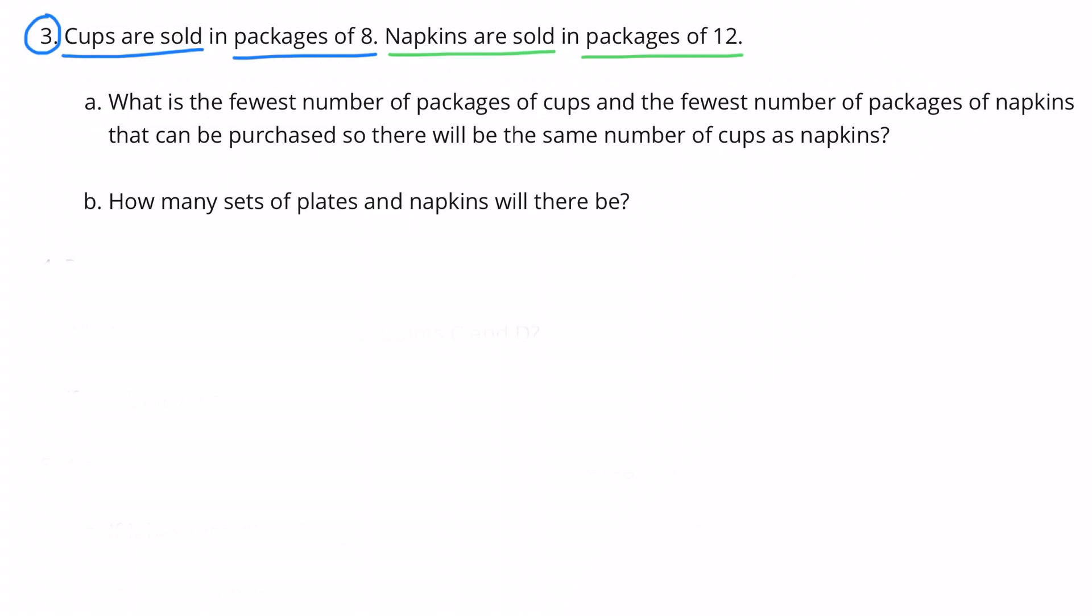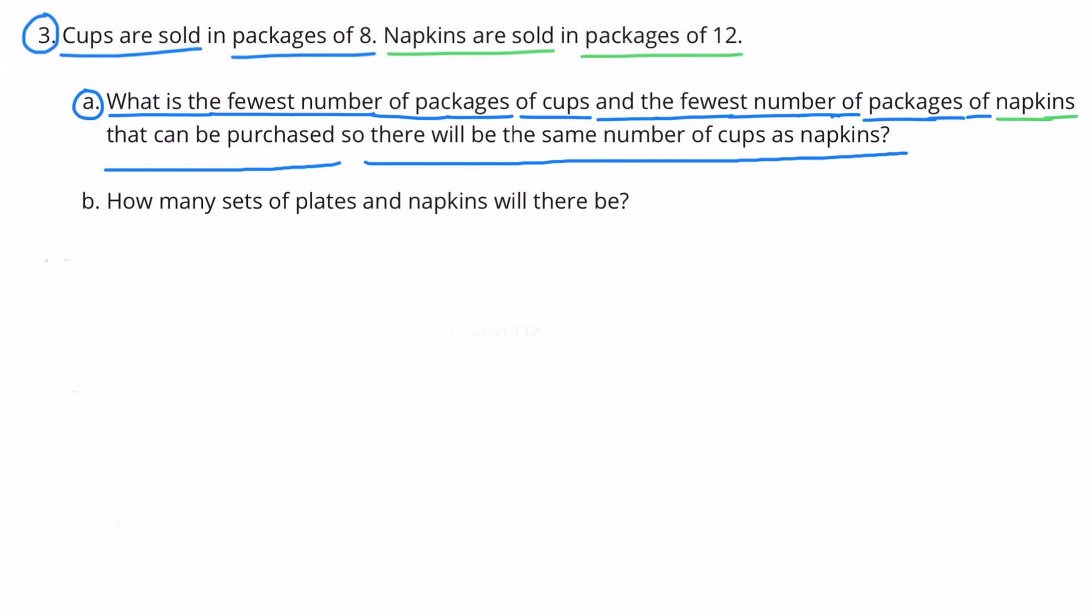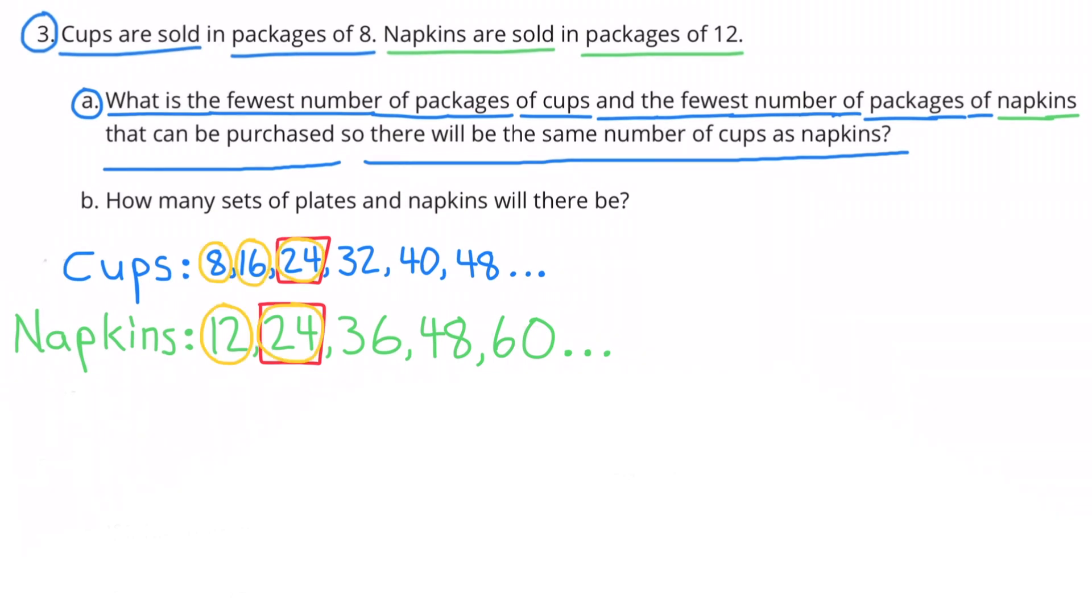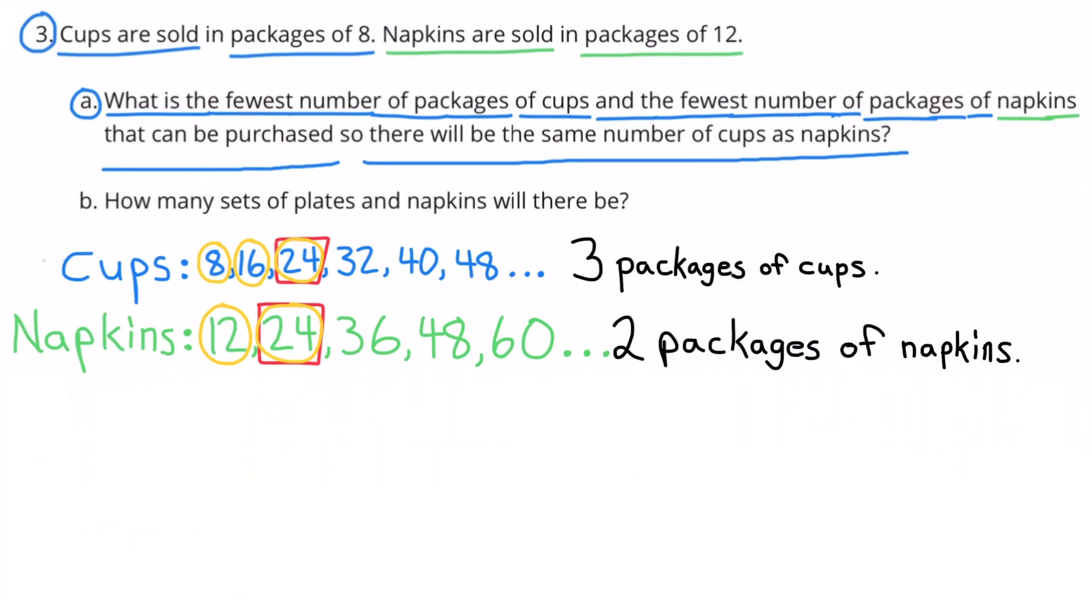Number 3. Cups are sold in packages of 8. Napkins are sold in packages of 12. A. What is the fewest number of packages of cups and the fewest number of packages of napkins that can be purchased so there will be the same number of cups as napkins? I've listed a few of the multiples of 8 and I've listed a few of the multiples of 12. Now we need to look for the least common multiple. The least common multiple of 8 and 12 is 24. 24 is the third multiple of 8 and 24 is the second multiple of 12. So you'd have to buy three packages of cups and two packages of napkins.